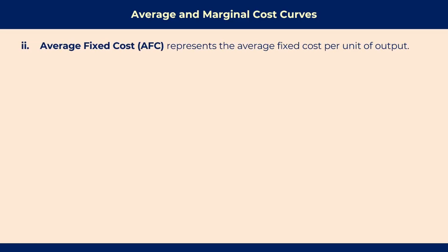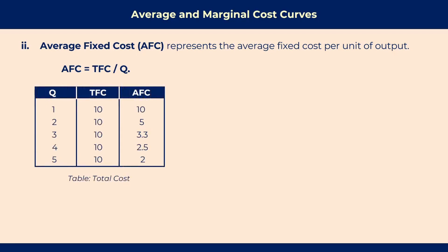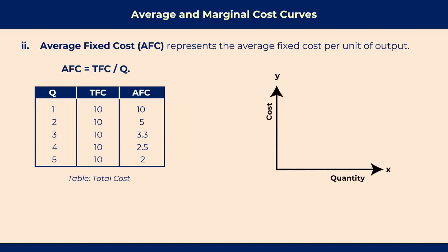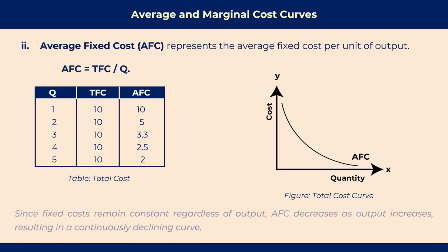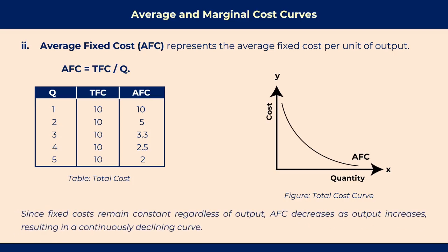Next is average fixed cost, which represents the average fixed cost per unit of output. The formula is: average fixed cost equals total fixed cost divided by quantity or output. From the table, to determine average fixed cost, we divide total fixed cost by quantity. To draw the graph, we take quantity on the x-axis and cost on the y-axis. Since fixed cost remains constant regardless of output, AFC decreases as output increases, resulting in a continuously declining curve. The shape of the AFC curve is a hyperbola.